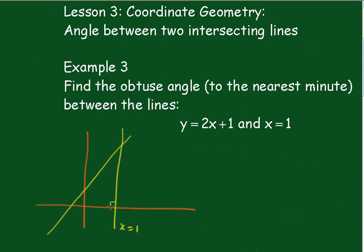There's a right angle there. However, we know we're going to find this angle here. We'll call it alpha. So we know that the gradient of this one is 2. Therefore, the tan of alpha is equal to 2. So alpha equals the inverse tan of this, which is 63 degrees and 26 minutes.